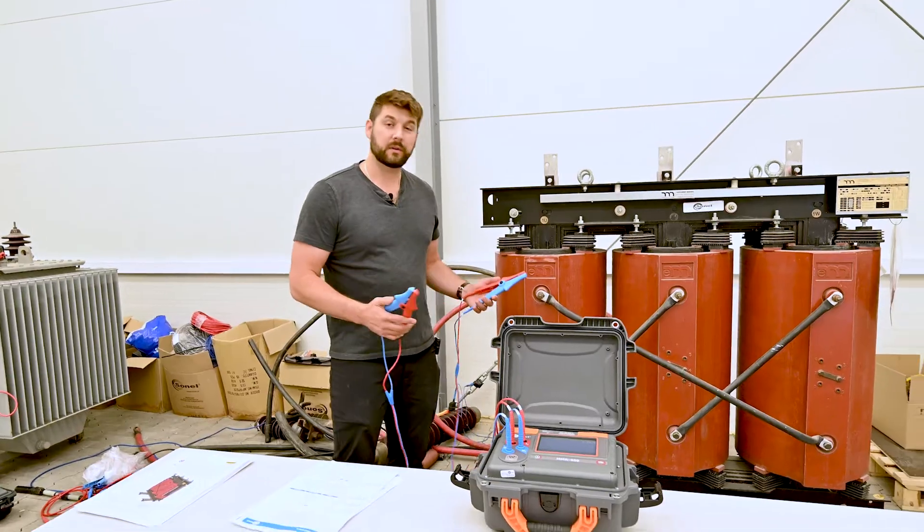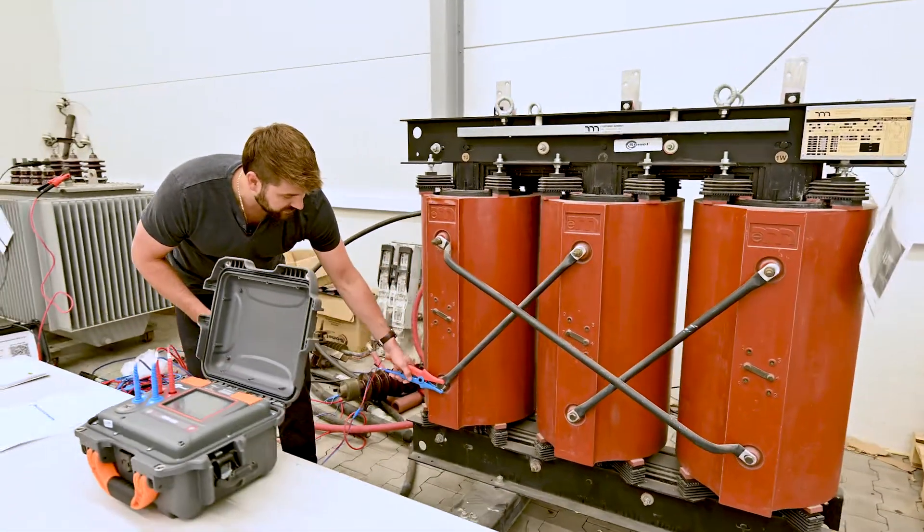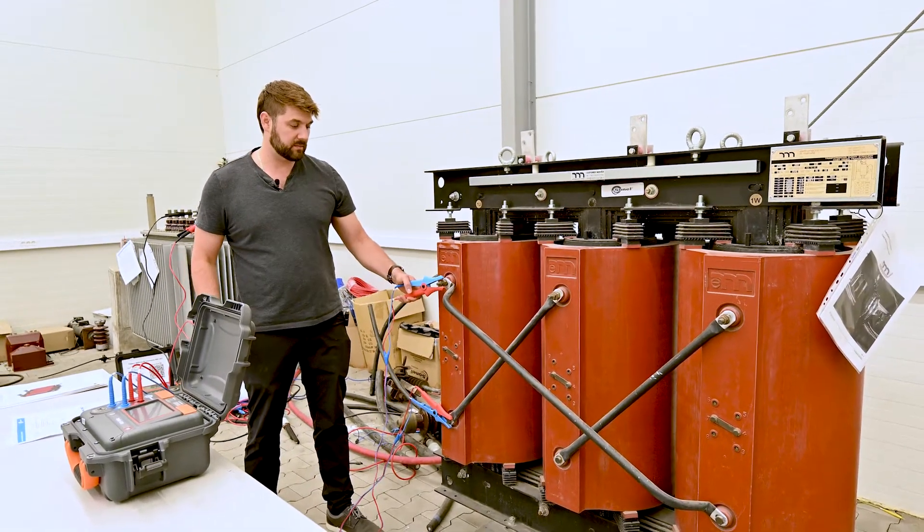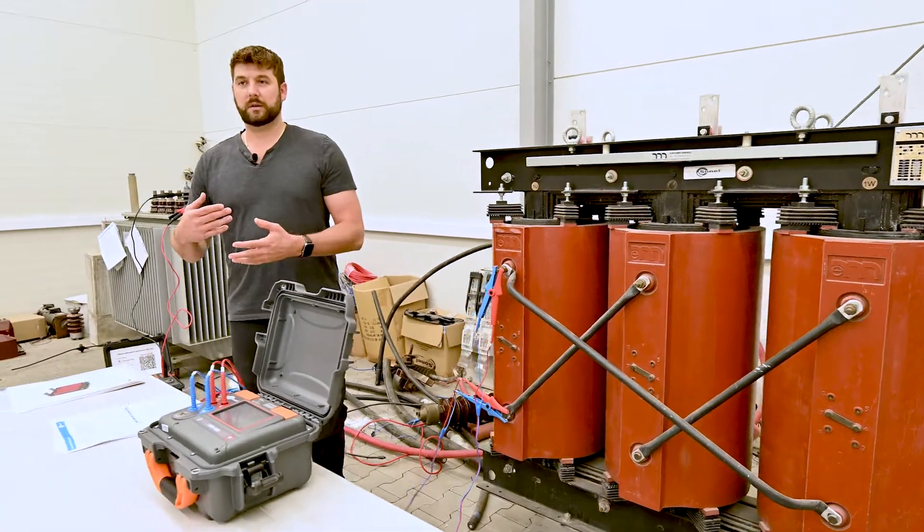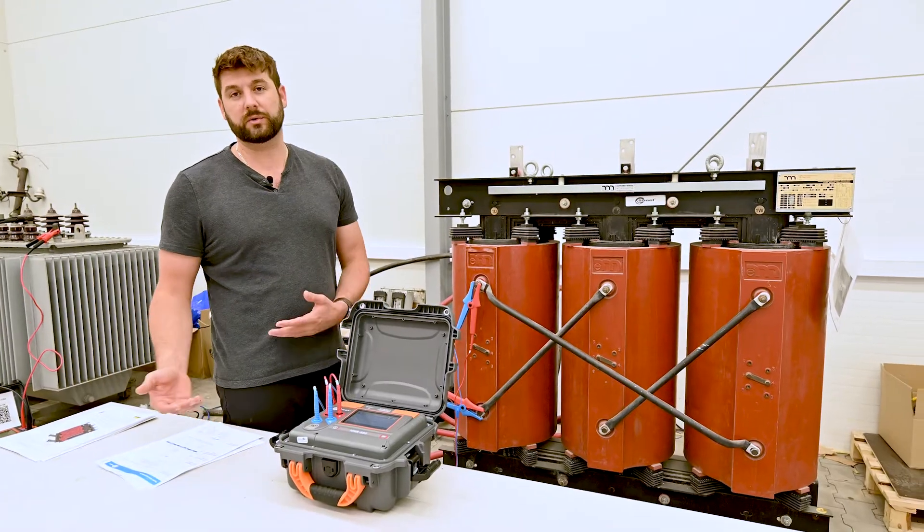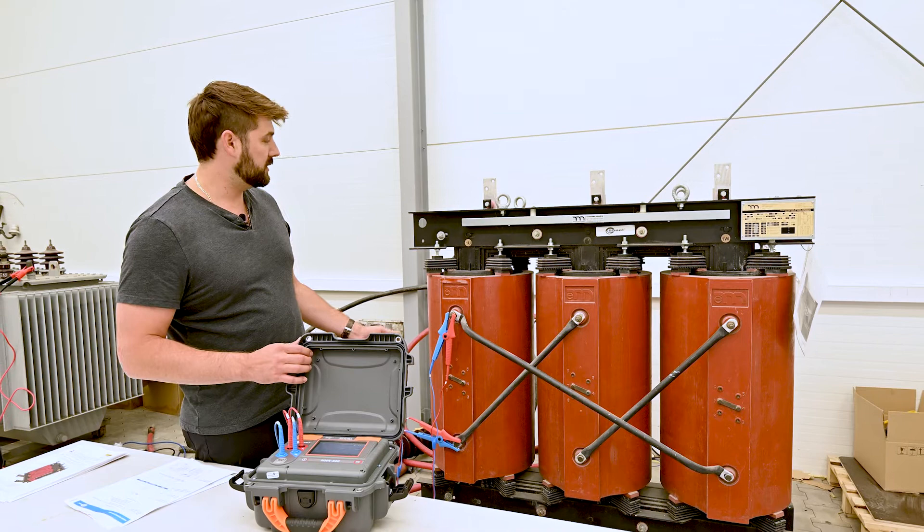Okay, so now we're going to move to the high voltage side of the transformer, which we expect would have a higher resistance because the high voltage windings are thinner and they're carrying less current. We're going to go across the first winding here.